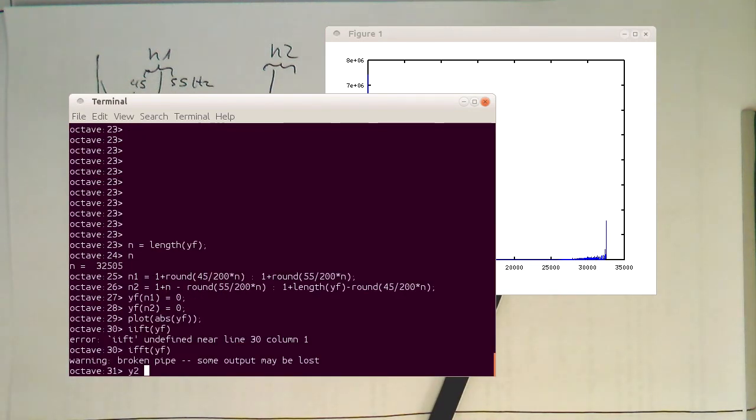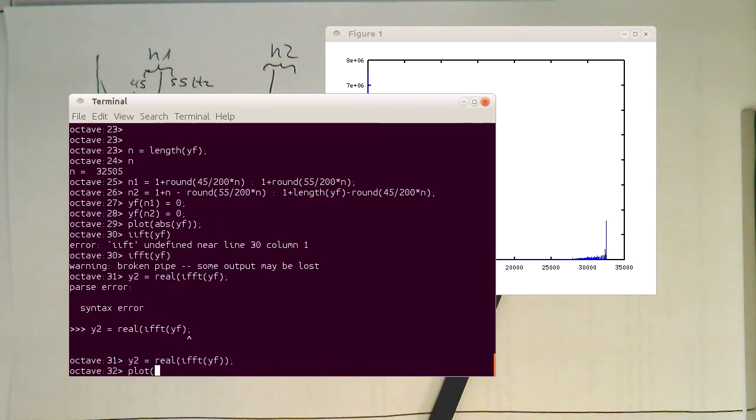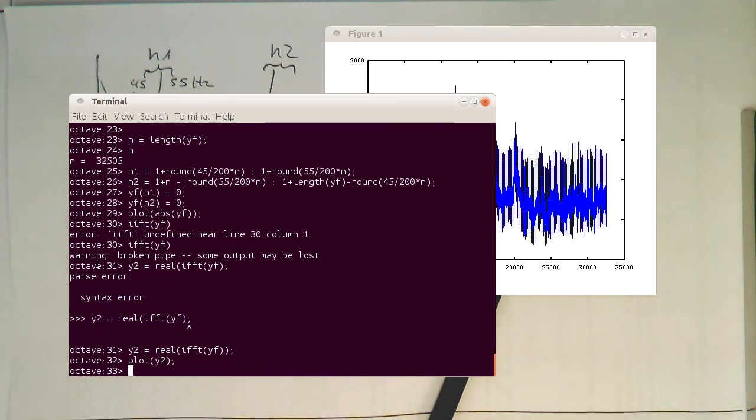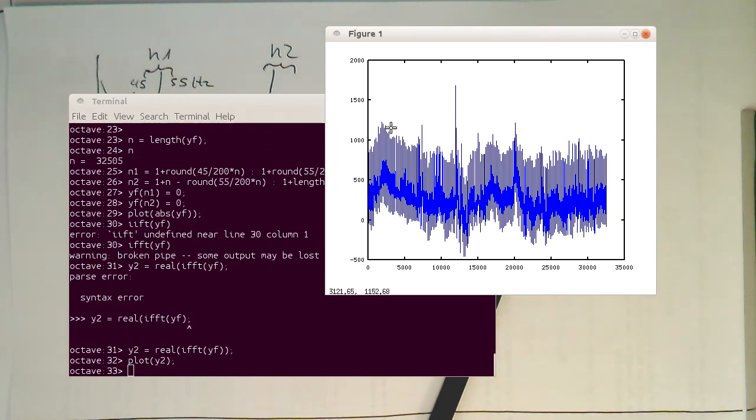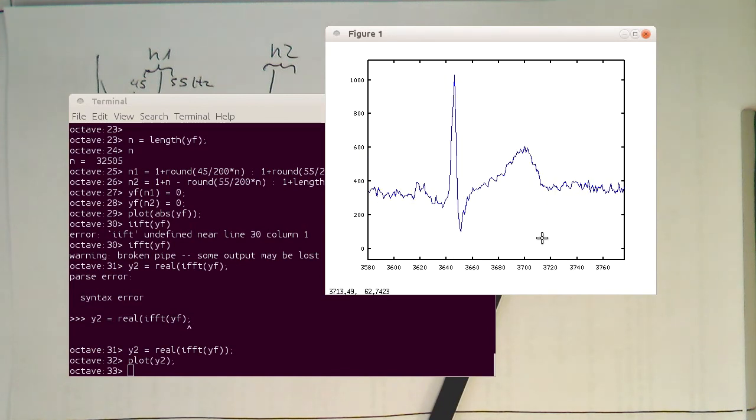So let's call this here Y2 and do the real part of our inverse Fourier transform here of YF. Bracket missing. So then let's plot that. So now we hopefully got rid of the 50 Hertz. So let's zoom into our ECG here a bit. And we see already that the signal is now clean and the 50 Hertz is gone. So there's just a bit of probably muscle noise or something like this. But the massive periodic component we had before is completely removed. And now we have a nice and clean ECG signal.